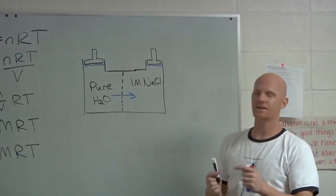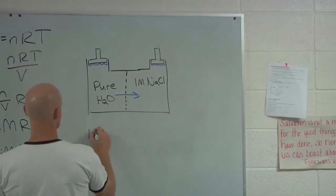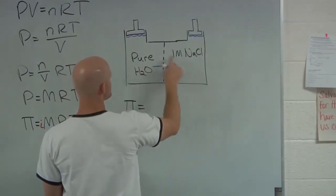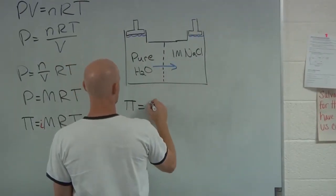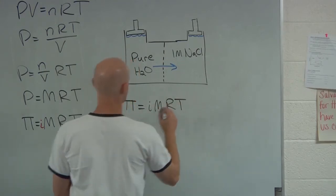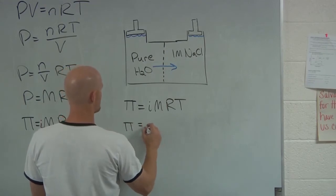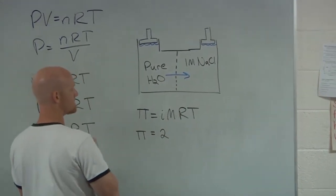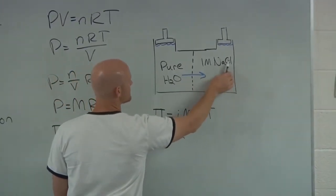And in this case, we could calculate it out. In this case, we'd say π equals the difference in concentration here. So I times M times R times T. And so again, π equals two for the Van't Hoff factor. NaCl breaks up into two ions.